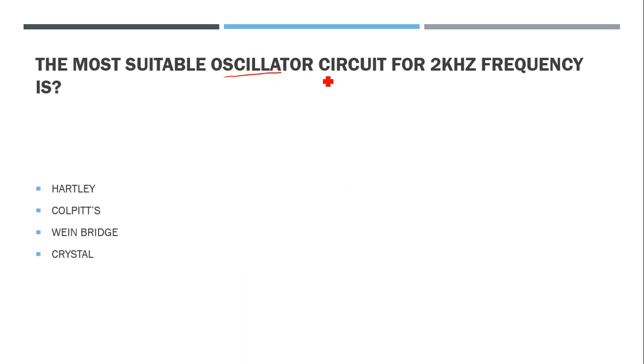The most suitable oscillator circuit for 2 kilohertz frequency is - the best suitable oscillator is the Wien Bridge oscillator. Wien Bridge oscillators are used for 2 kilohertz range or even bit higher. What about the others? Hartley oscillator and Colpitts oscillator are LC oscillators.